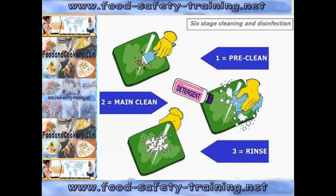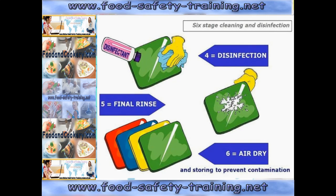We are now going to look at six-stage cleaning and disinfection. First, the pre-clean: the initial removal of any food accumulations, dirt, and debris. Second, the main clean using a detergent, which brings all the food debris, grease and dirt into solution form. Third, the rinse, which takes away the solution containing all the dirt and food debris. Fourth, disinfection: having removed the biofilms, dirt, grease and grime, a disinfectant can now reduce bacteria to a safe level.